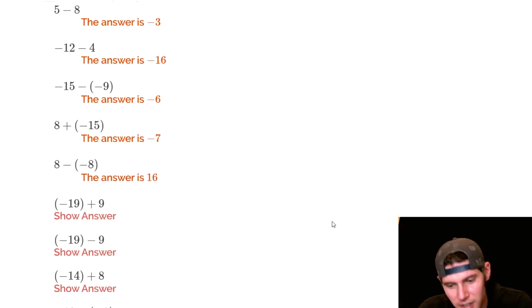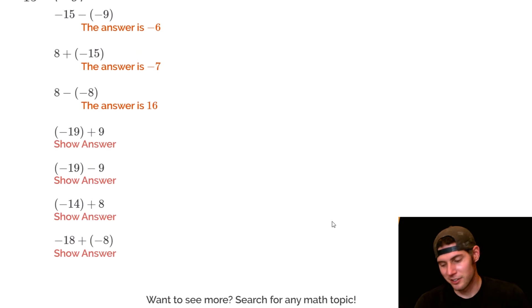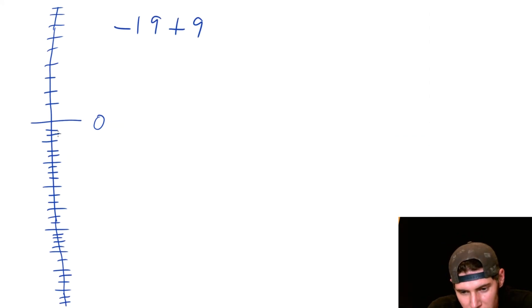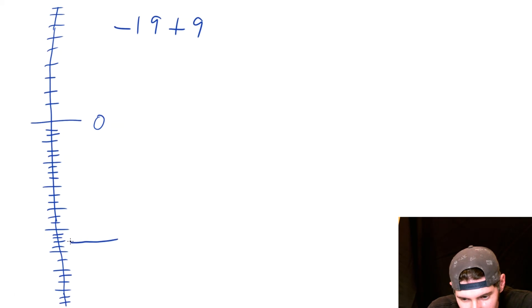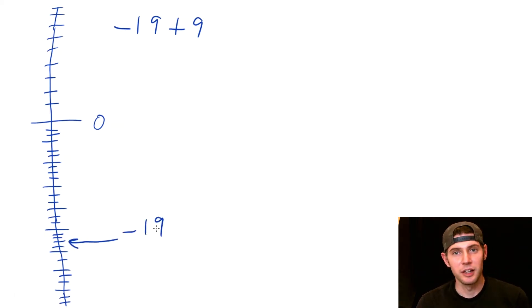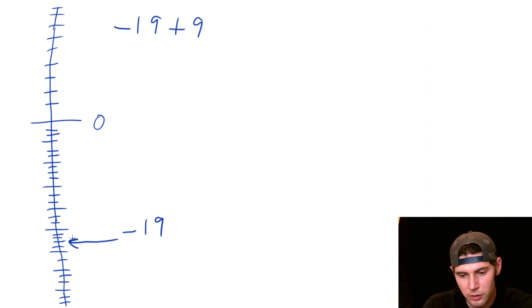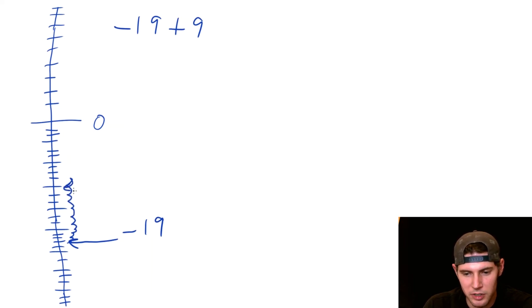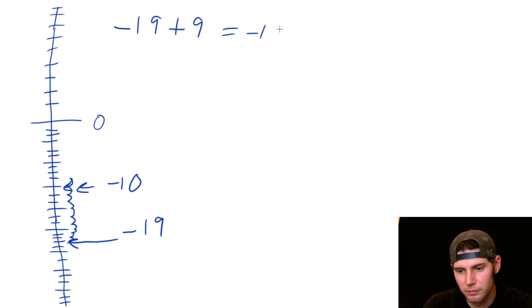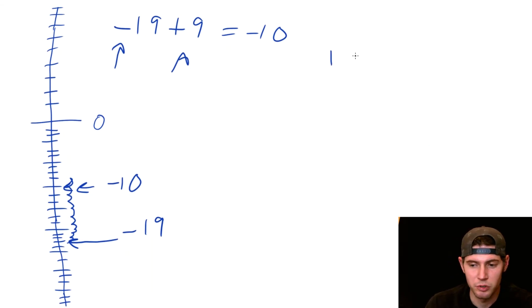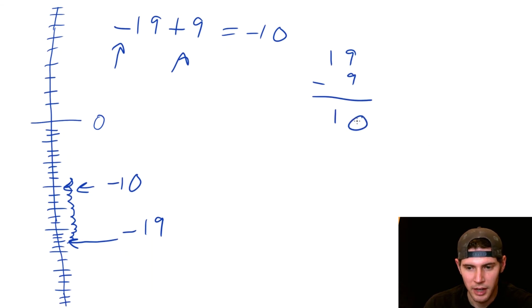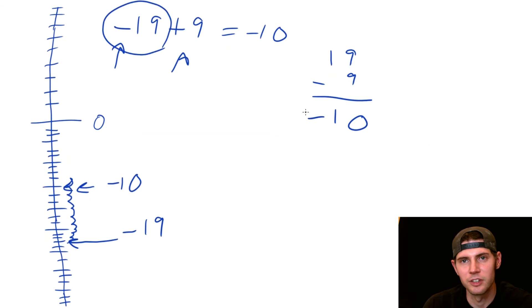Next: negative nineteen plus nine. We start at negative nineteen and then go up nine: one, two, three, four, five, six, seven, eight, nine. Counting gives us negative ten. Alternatively, negative and positive work against each other — nineteen minus nine is ten — and since the larger number was negative the answer is negative ten.